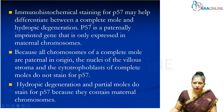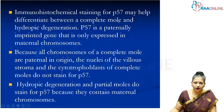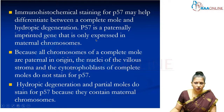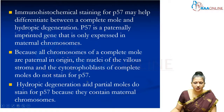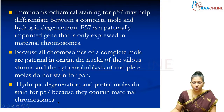P57 immunohistochemistry staining can help differentiate between a complete mole and hydropic degeneration. P57 is a paternally imprinted gene that is only expressed in maternal chromosomes. In a complete mole, all the genetic material is formed from the fusion of two spermatozoa, so the nuclear villus stroma and cytotrophoblast of a complete mole will not contain P57. Partial mole and hydropic degeneration may stain for P57 because they contain maternal chromosomes.